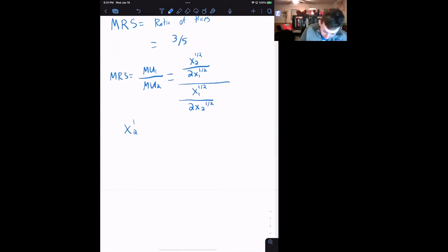So we've got X2 to the one-half over 2X1 to the one-half. We'll just flip that fraction to multiply it, so we'll get 2X2 to the one-half on top over X1 to the one-half. And we're going to see that these twos are going to cancel out.